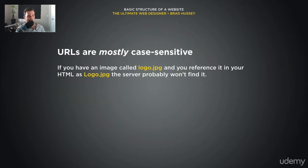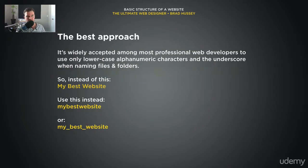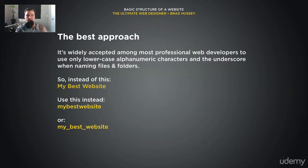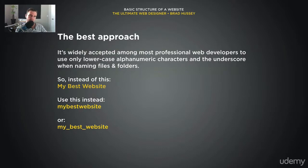URLs are mostly case sensitive, which means if you have an image called logo.jpg, all lowercase, and you reference it as Logo with a capital L, the server probably won't find it. The best approach — widely accepted among professional web developers — is to only use lowercase alphanumeric characters and the underscore when naming files and folders. So instead of My Best Website with capital letters and spaces, use my_best_website: all lowercase with underscores replacing spaces.